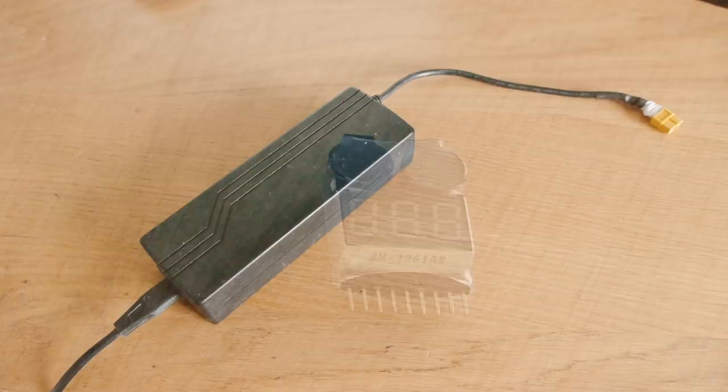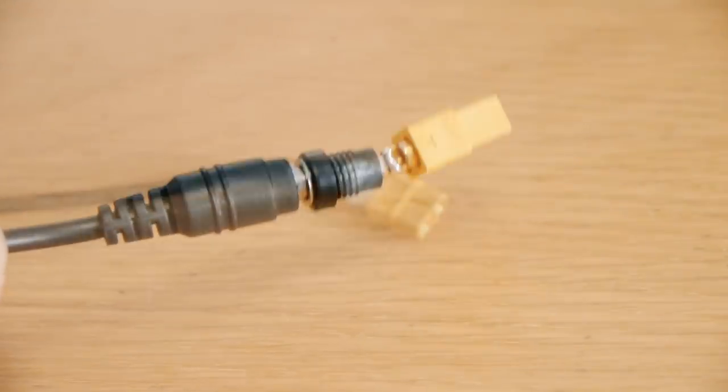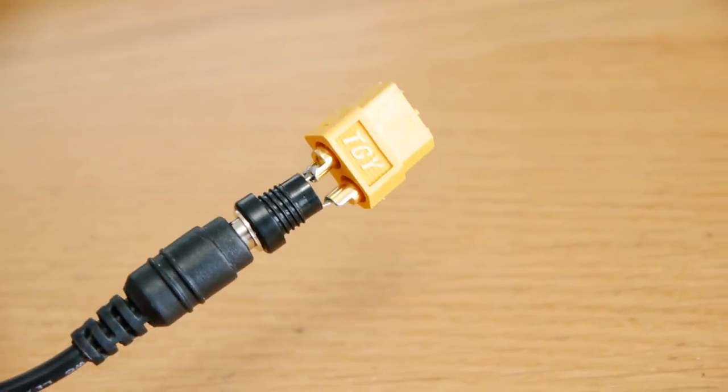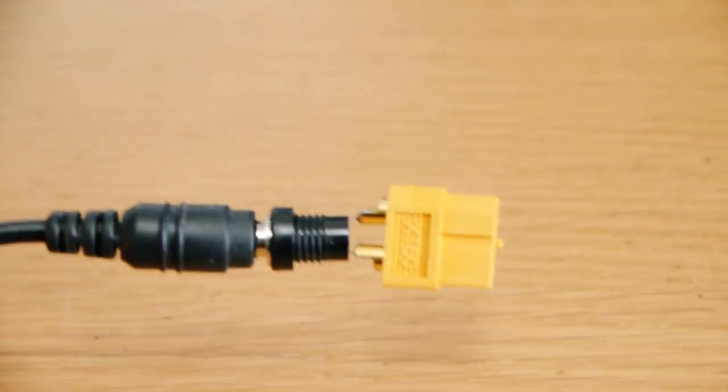If it hasn't got one already, remember to solder on a male XT60 connector to the power source you want to use. If you want, you can make little adapters so that you can hook it up to laptop power supplies, for example, without replacing the connectors.